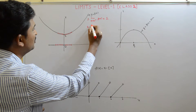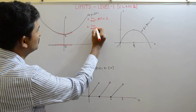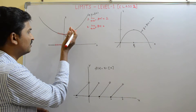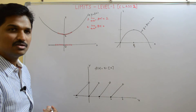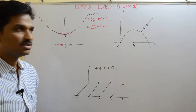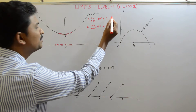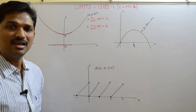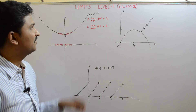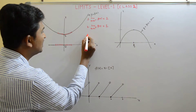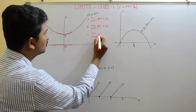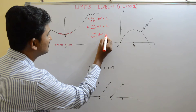The right hand limit of the function: limit x approaches to 0 from the right, f of x approaches to 1. So the right hand limit is also 1. When left hand limit equals right hand limit, we say the limit of the function exists, and we write: limit x approaches to 0, f of x equals 1.